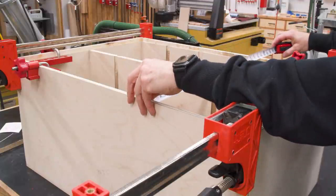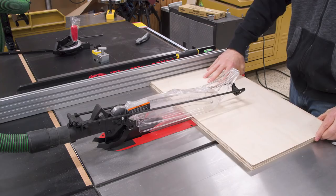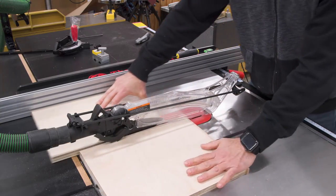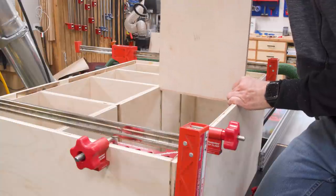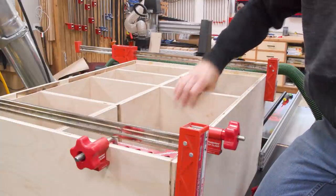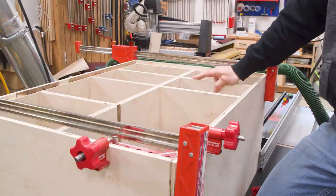With the case dry assembled, I can take the measurements for the shelves. Now be careful here because there's totally a chance that the top and bottom dados aren't perfectly centered from left to right and then your left and right shelf sets will be slightly different. So sneak up on the fit, get it perfect.